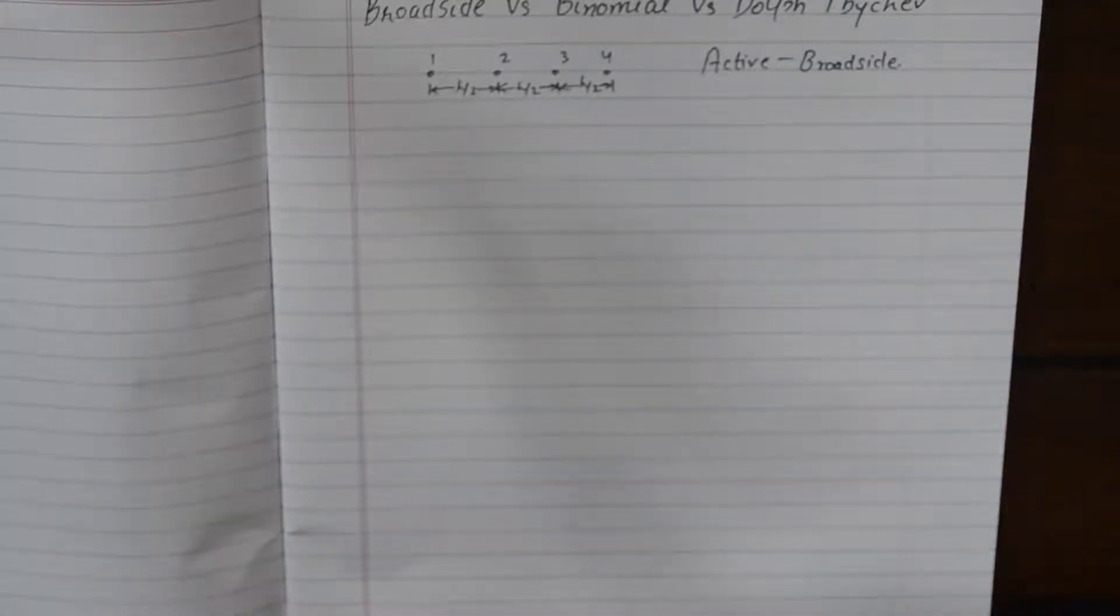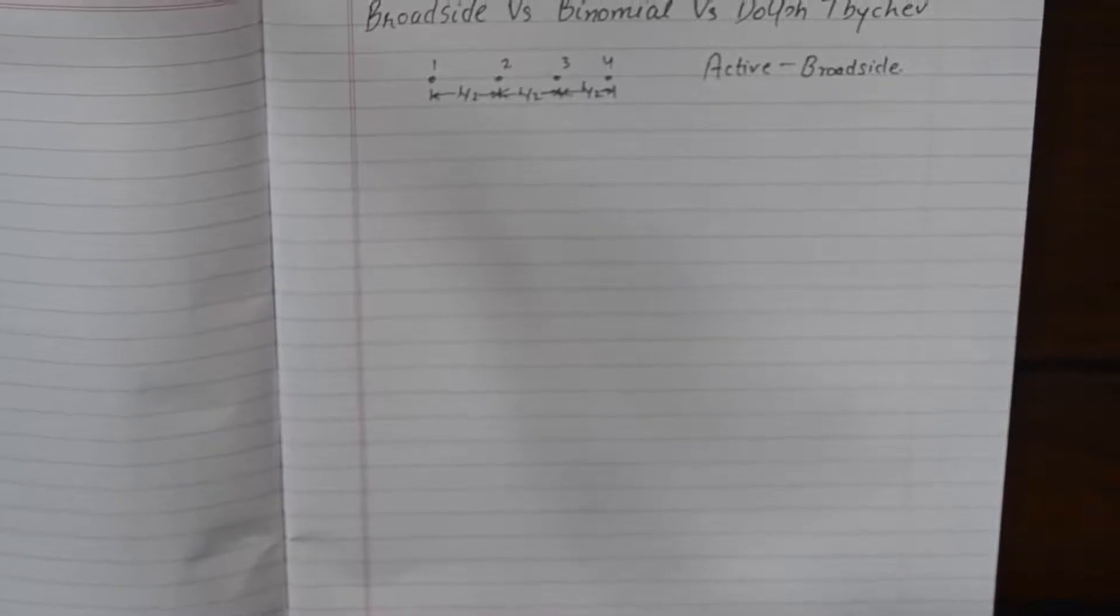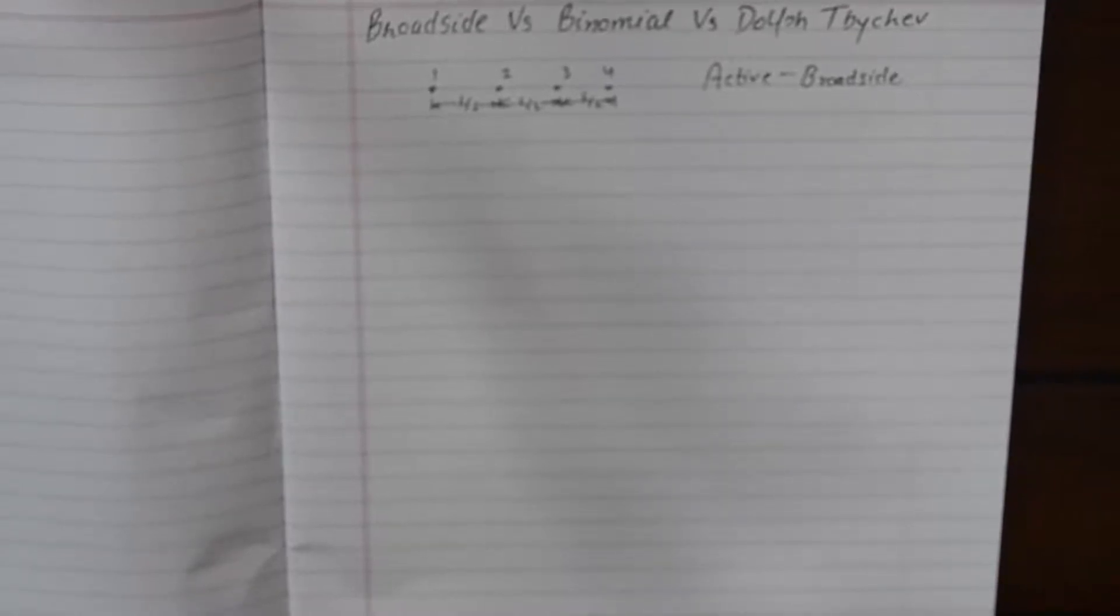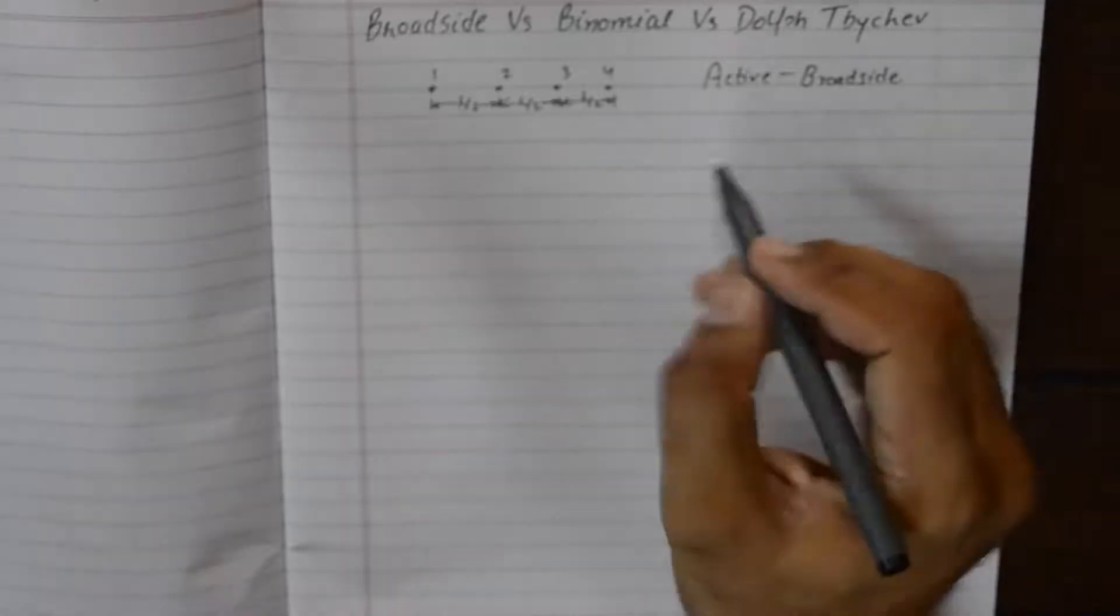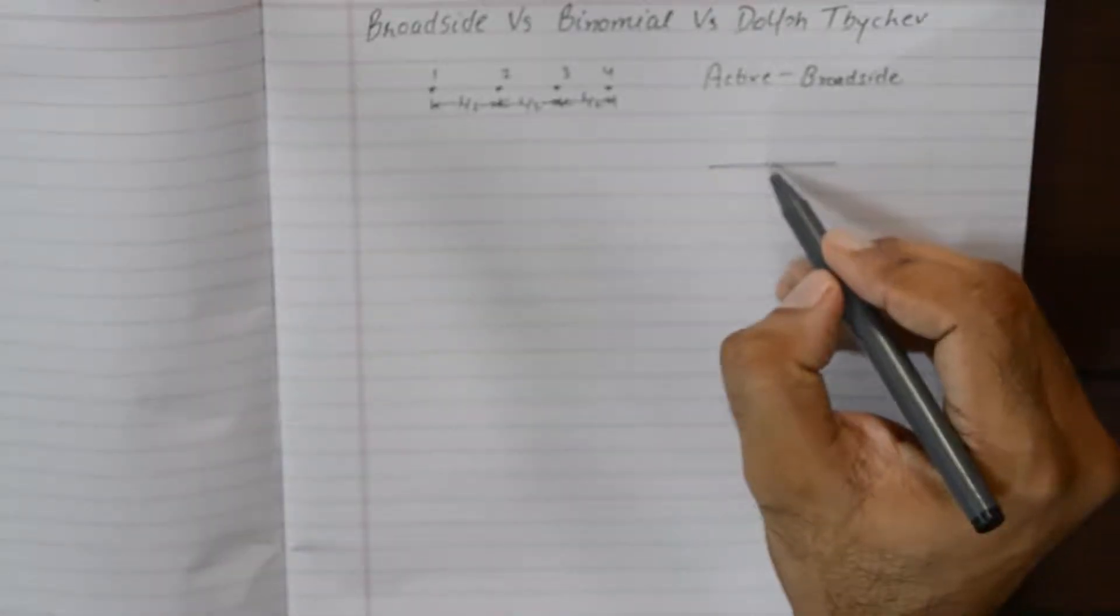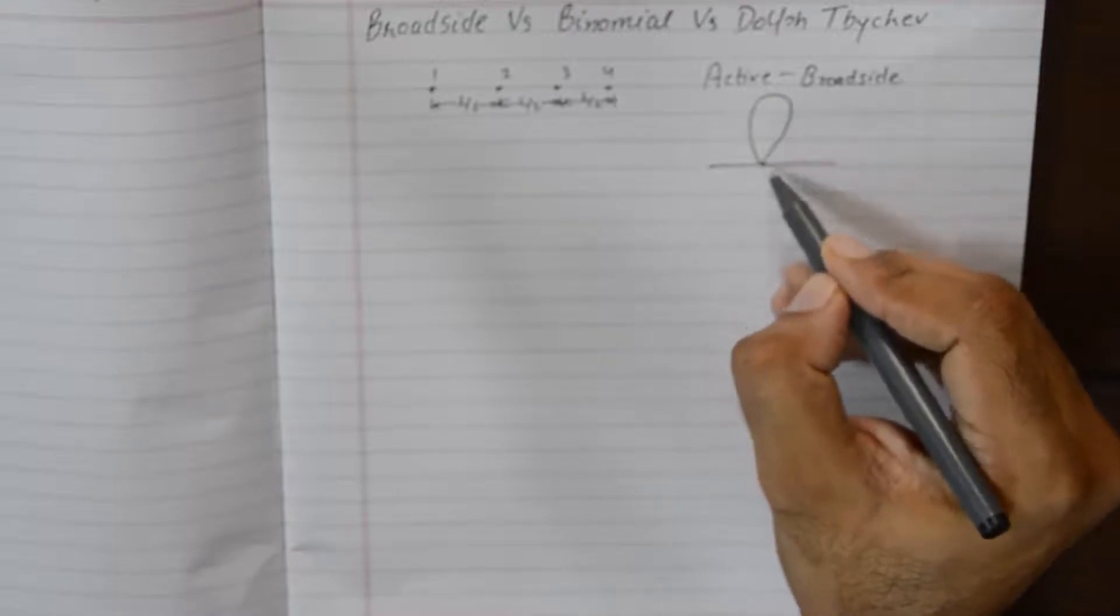By active elements we mean that all the elements are going to be supplied with the same amount of energy or power. Now if we progress on to make a binomial array, we should understand why do we make it in the first place. If you look at the radiation pattern of a broadside array it is going to look something like this.